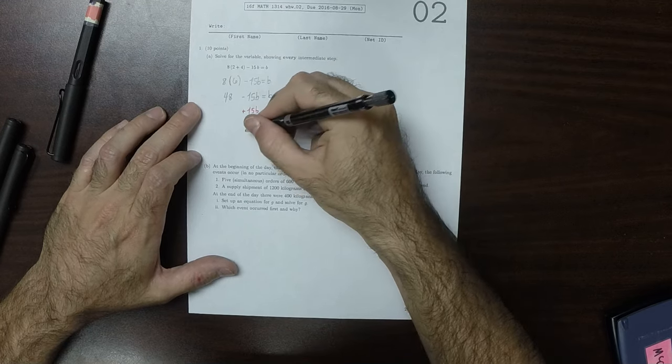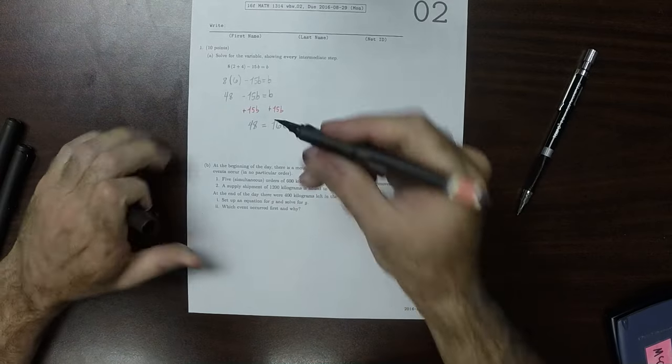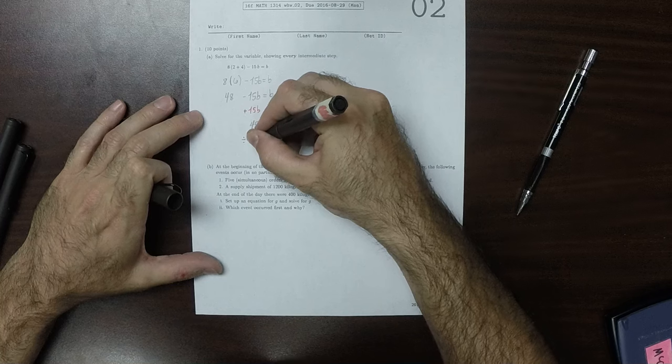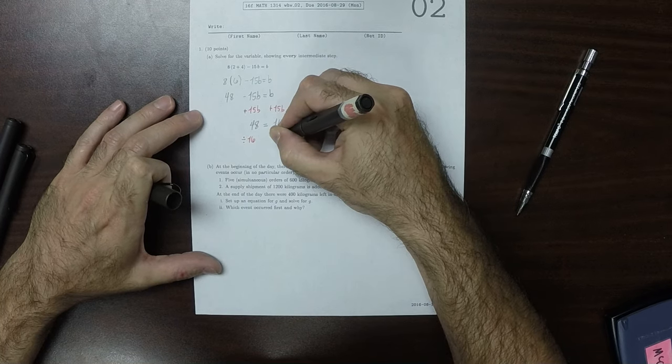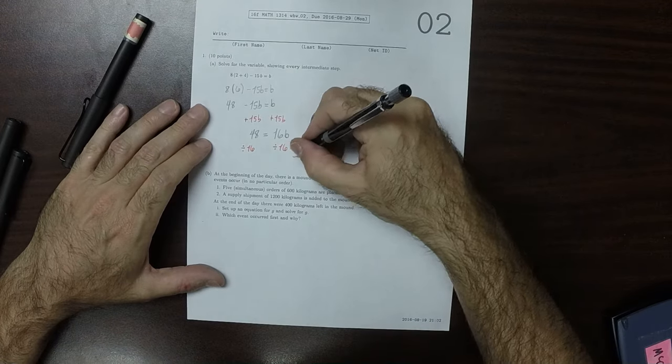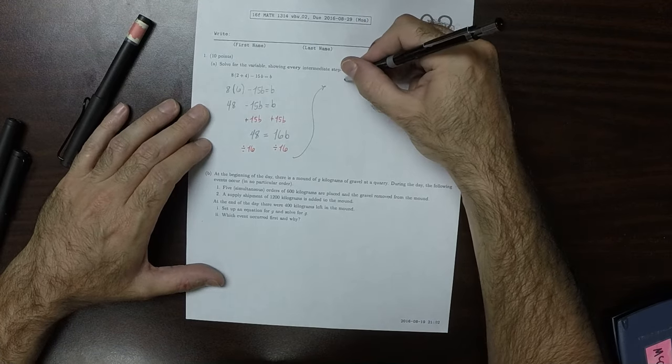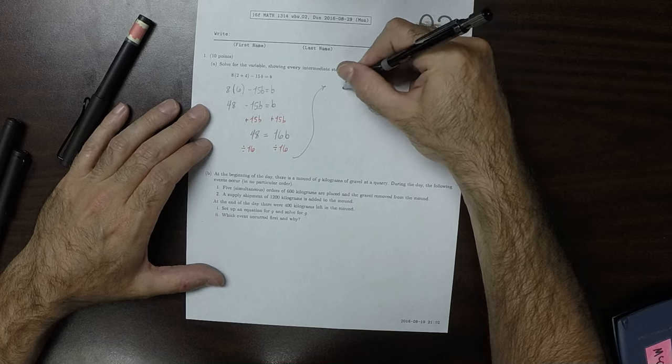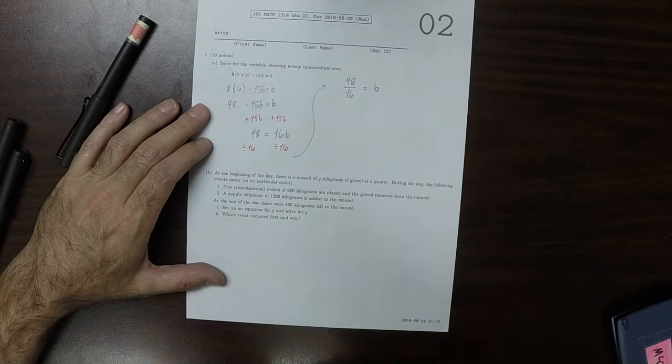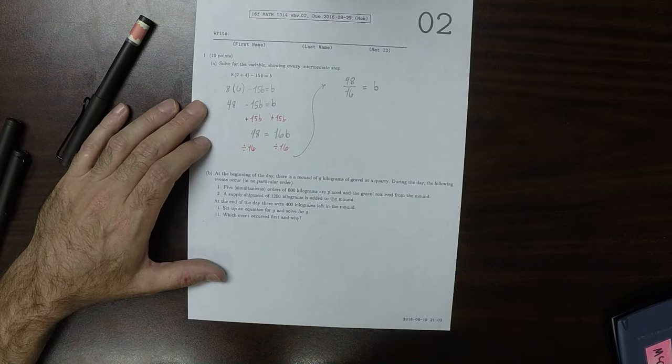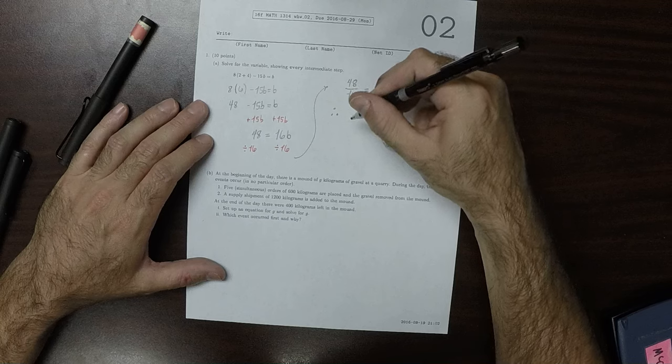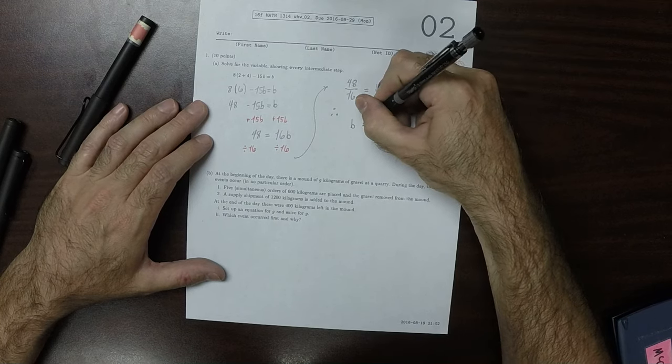We can divide both sides by 16. If we do that, then 48 over 16 is B. But 48 over 16 is 3, and therefore B is 3.